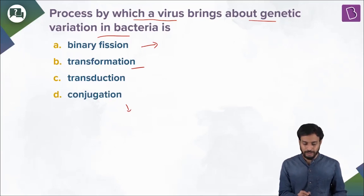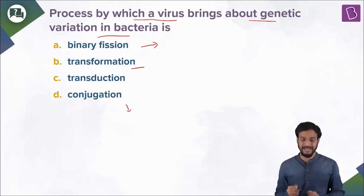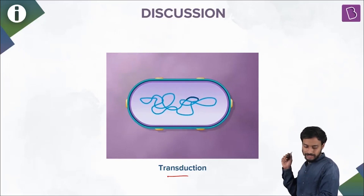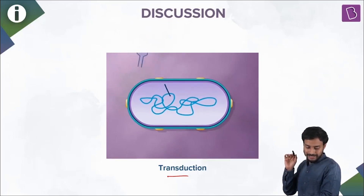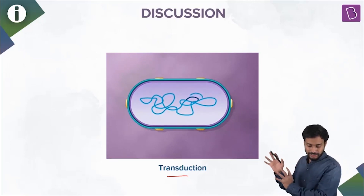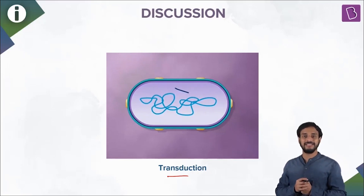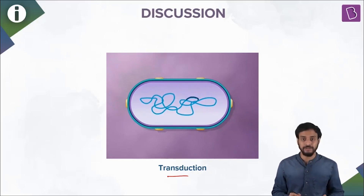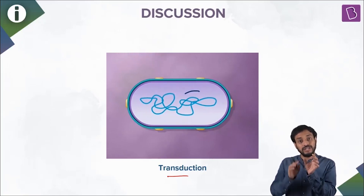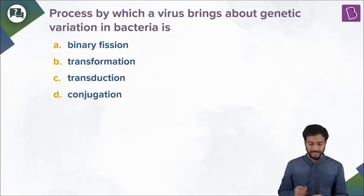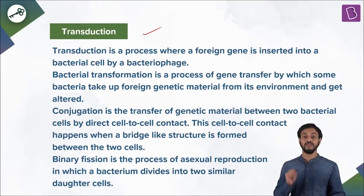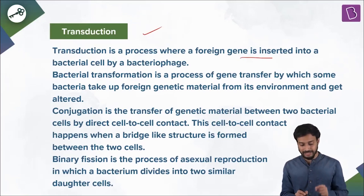The process by which a virus brings about genetic variation in bacteria is transduction. The virus inserts genetic material that gets integrated by replacing a part of the genome of the bacterial cell. So the bacterial cell now carries the virus's genes — a change in genetic material has occurred. Transduction is the process where a foreign gene is inserted into the bacterial cell by a bacteriophage.